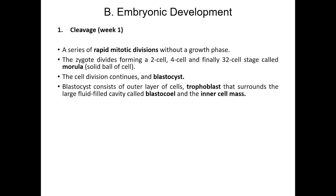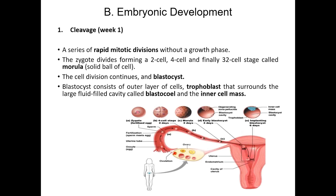Now we move to the subsequent phase of human development: embryonic development. About 24 hours after fertilization, the zygote undergoes cleavage — a series of rapid mitotic divisions without a growth phase. That means, although the cell number increases, the size of the embryo does not increase. At about the 32-cell stage, a solid ball of cells called the morula is formed. Cell division continues and eventually forms the blastocyst.